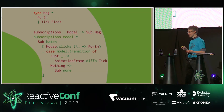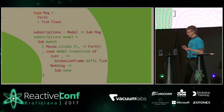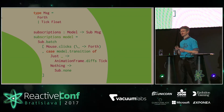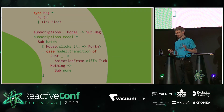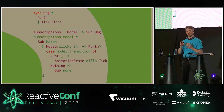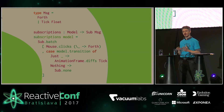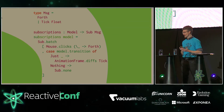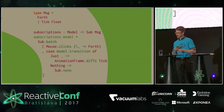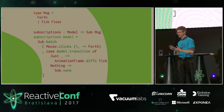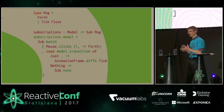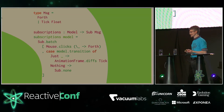Having these messages defined, we define our subscriptions. We want to subscribe to mouse clicks — this is what Mouse.clicks does — so whenever the user clicks anywhere on the screen, we map that event to the Forth message. And in the case we have a transition, we subscribe to the AnimationFrame.diffs subscription, which hooks into the browser's window.requestAnimationFrame and gets the time delta from there and passes it on to our Tick message. We can write our subscriptions to events very declaratively in Elm.